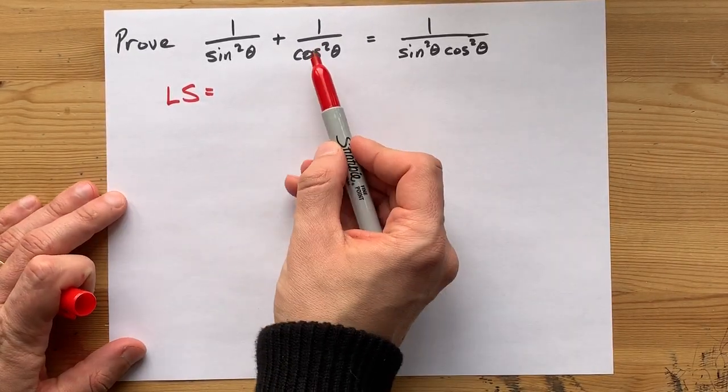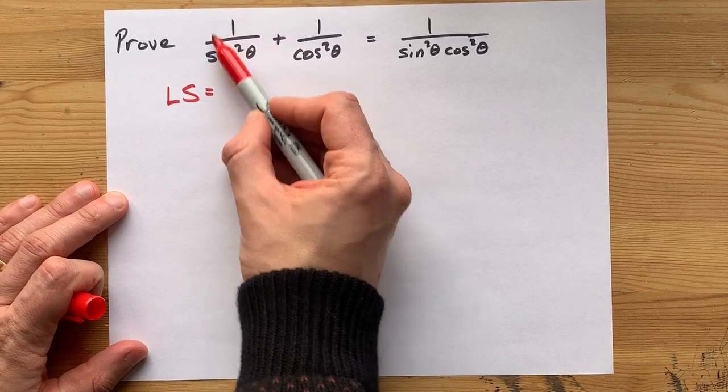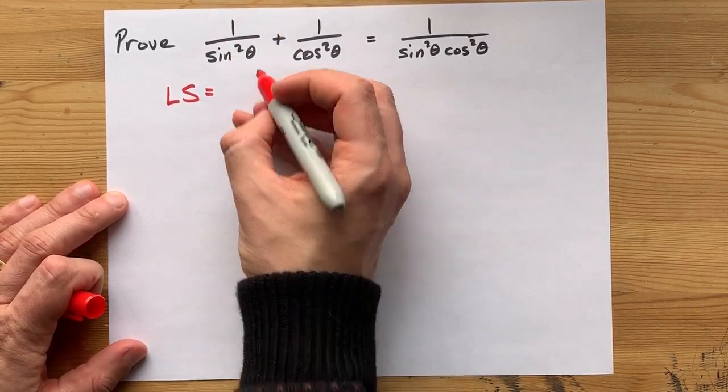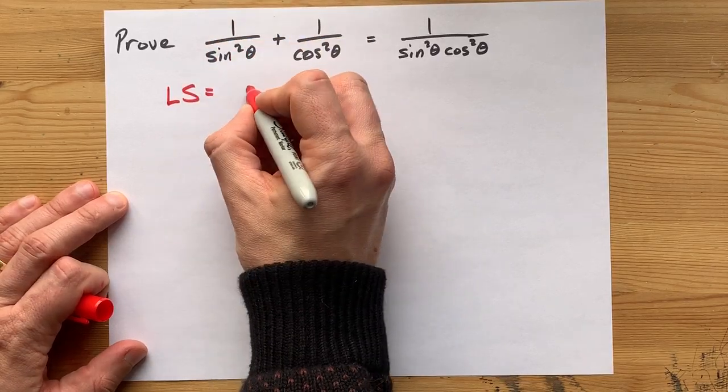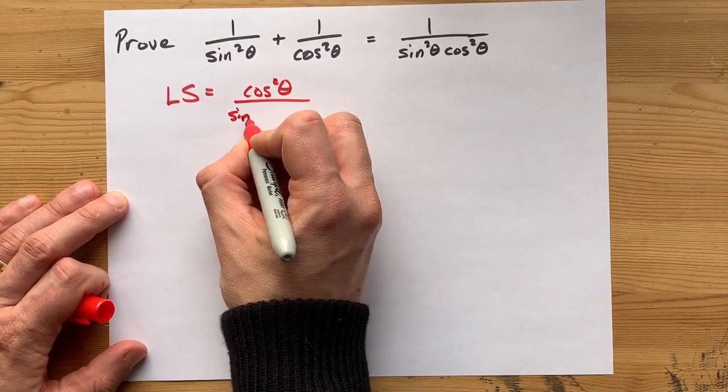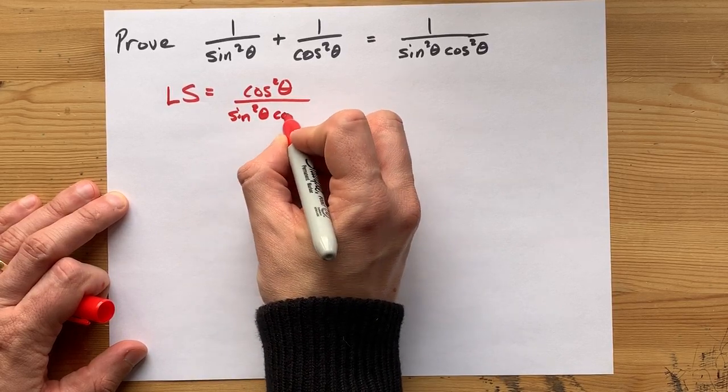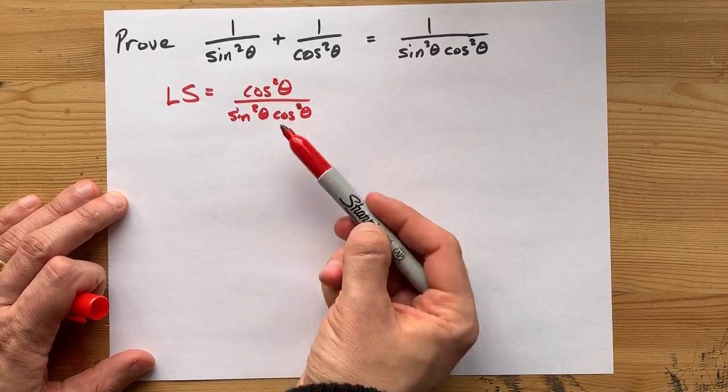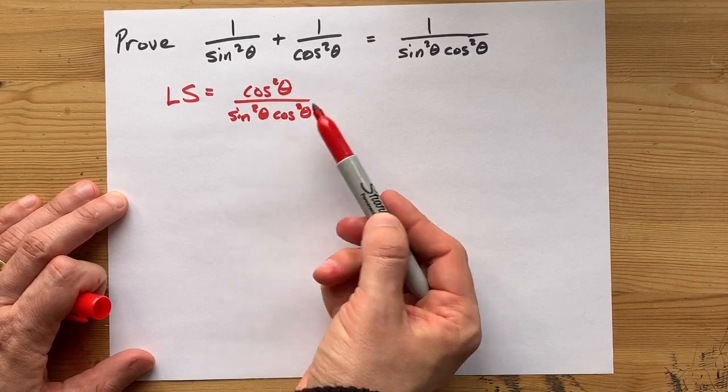In order to get a cos squared built in here, we're going to have to multiply the top and bottom by cos squared. This first fraction becomes cos squared over, the sine squared is still there, and we have an additional cos squared. So, top and bottom got multiplied by cos squared theta.